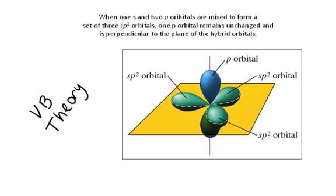When 1s and 2p orbitals are mixed to form a set of 3 sp2 orbitals, one p orbital remains unchanged and is perpendicular to the plane of the hybrid orbitals.